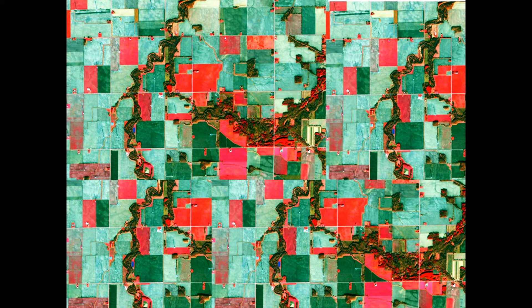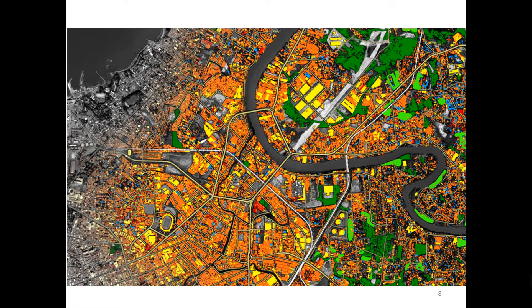These algorithms include random forests, support vector machines, decision trees, maximum likelihood, and convolutional neural networks.